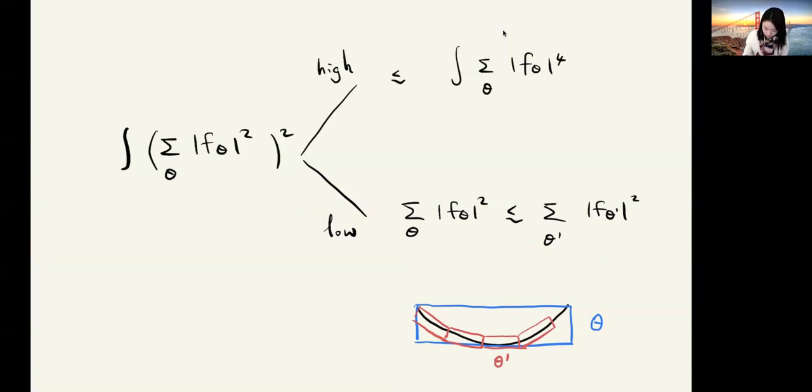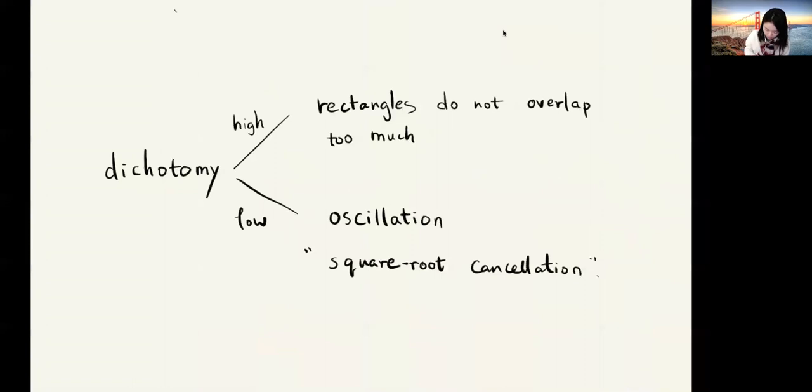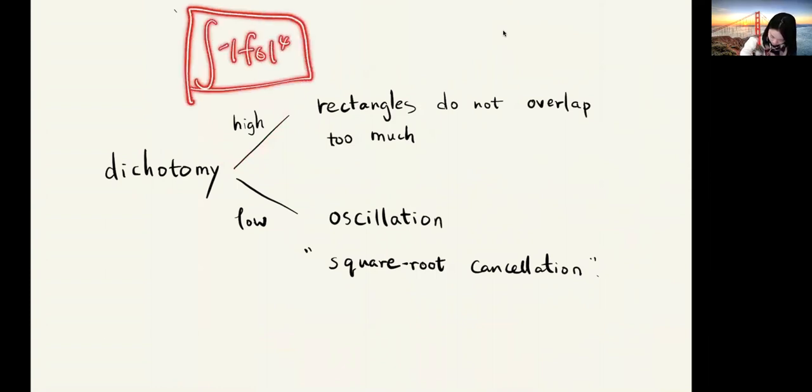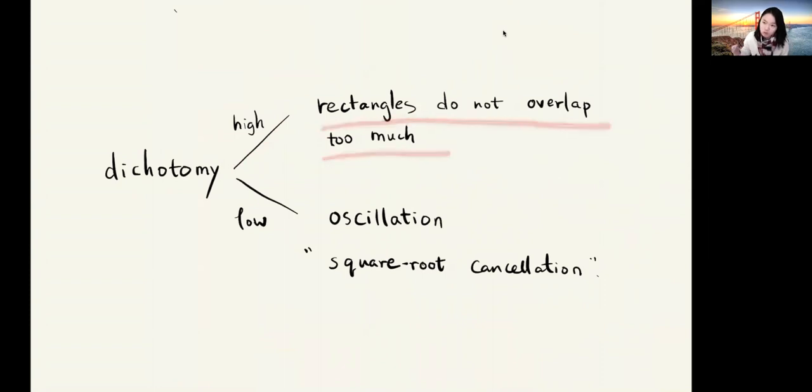Here we have some dichotomy. If it's high frequency dominate, then this little l^4 sum, this quantity of sum over theta, essentially says that rectangles do not overlap too much. Then we will gain from some geometric information. If it's low frequency dominate, so the rectangles might overlap, but here we can make use of the oscillation. So it eventually gives some information like the square root cancellation.